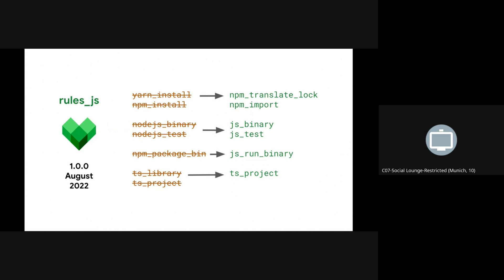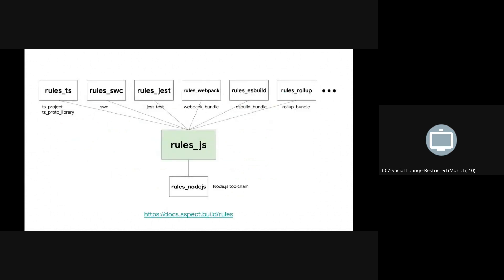Around 2021, Alex and I devised Rules.js and started writing it. It was released 1.0 in August 2022, just over a year ago. We replaced the repository rules with a new one named npm_translate_lock that adopts pnpm instead of yarn and npm. We wrote new binary rules for running and testing JavaScript that solved some of the compatibility issues. We have a new rule called JS Run Binary for running tools that produce outputs, following the API closer to what Skylib Run Binary provides. We kept TS Project but didn't bring over TS Library. We still depend on Rules Node.js for the Node.js toolchain, but Rules.js was otherwise a complete rewrite.